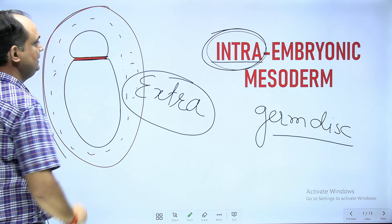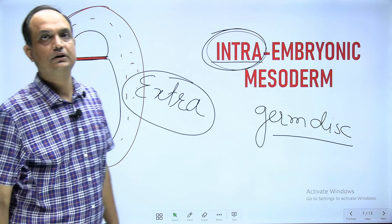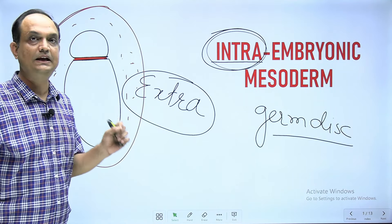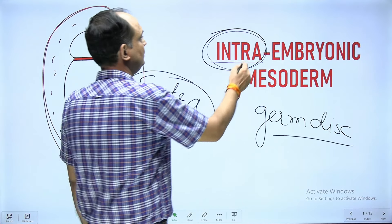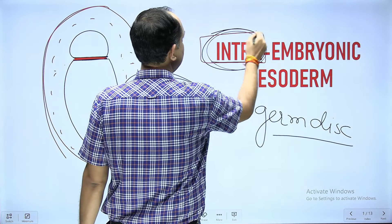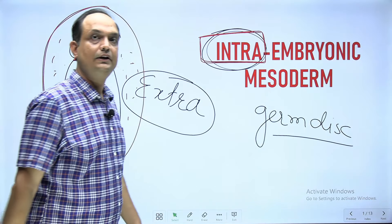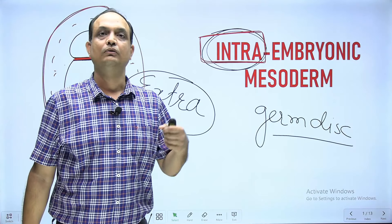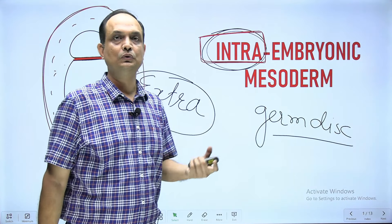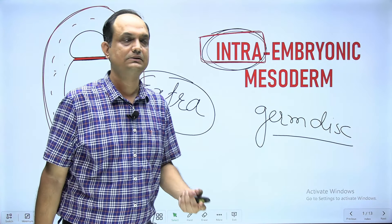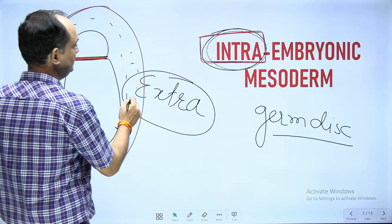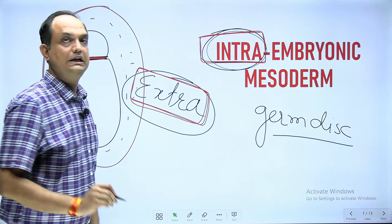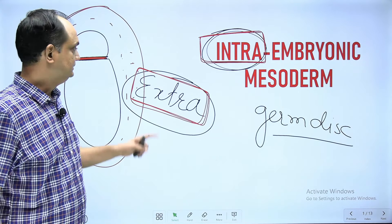When we use the word 'intra,' the intra embryonic mesoderm means the mesoderm which is going to develop in the trilaminar germ disc after the process of gastrulation. When we talk about intra embryonic mesoderm, we are talking about the definitive mesoderm, which forms body parts like bones, ribs, vertebrae, and skeletal muscles.